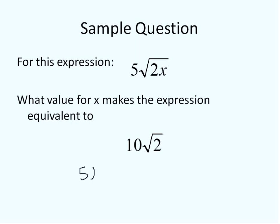We could set them up as being equivalent to each other. 5 and the square root of 2x is equal to 10 square root of 2. And try and set them up and work out on both sides. What do I need to do to make them look like each other? Alright. So, we know a couple of things about this. Let me move it up here so I've got a little bit more space to work with. I know that 5 times 2 is 10.